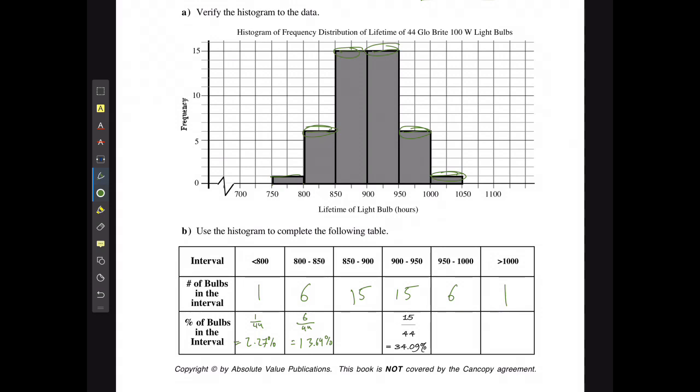This one, 15 divided by 44 equals 34.09 percent. This one, 6 divided by 44 equals 13.64 percent. And 1 divided by 44 equals 2.27 percent.